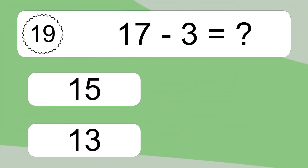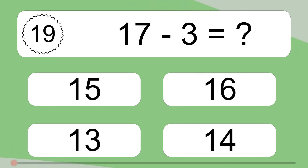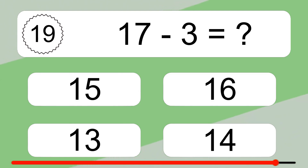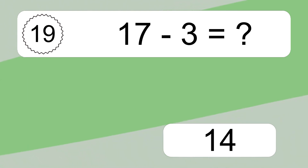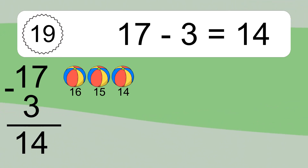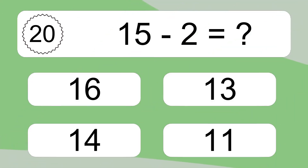17 minus 3 equals what? 17 minus 3 equals 14. Let's count it: 16, 15, 14.